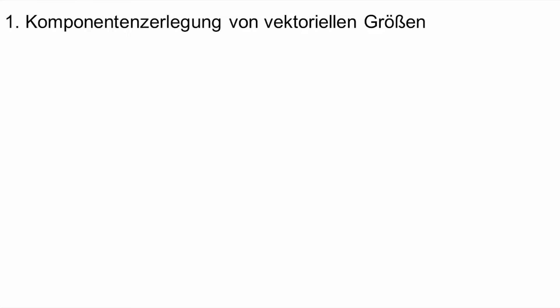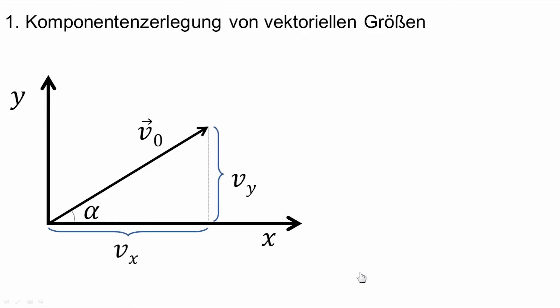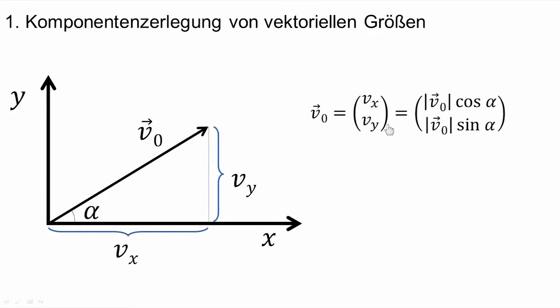Kommen wir zunächst zu den Voraussetzungen, die wir benötigen, um physikalische Wurfprobleme lösen zu können. Als erstes gilt es, die Komponentenzerlegung von vektoriellen Größen zu verstehen. Betrachten wir dazu dieses Koordinatensystem hier und einen Vektor V0, den wir in seine x- und in seine y-Komponente zerlegen wollen. Dazu verwenden wir einfache Trigonometrie, das heißt, wir brauchen den Winkel Alpha, den der Vektor V0 mit der x-Achse einschließt. Dann können wir die x- und die y-Komponente des Vektors V0 darstellen als den Betrag von V0 mal Cosinus Alpha, oder für die y-Komponente den Betrag von V0 mal Sinus Alpha.